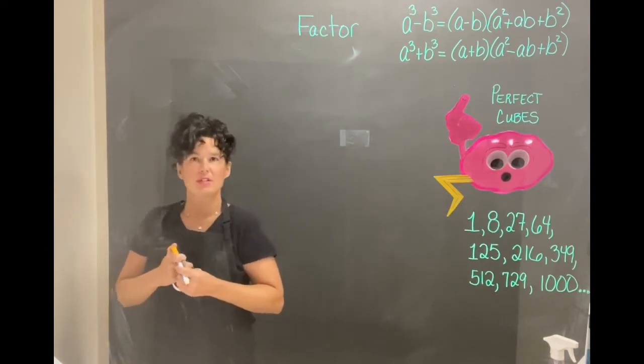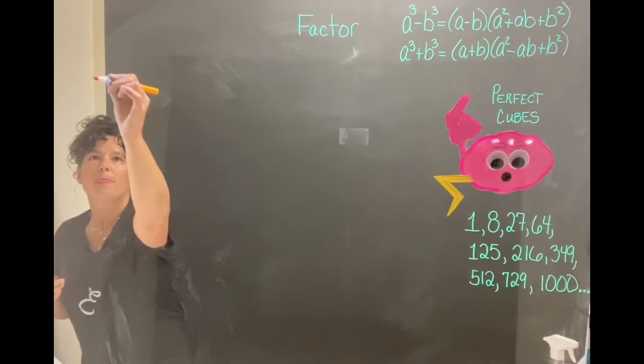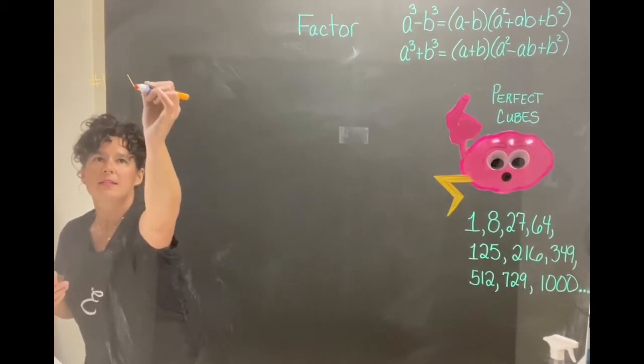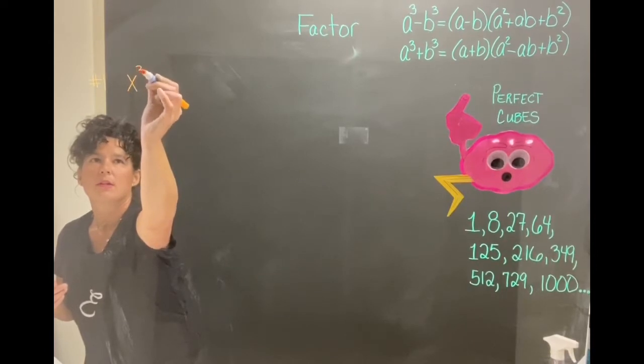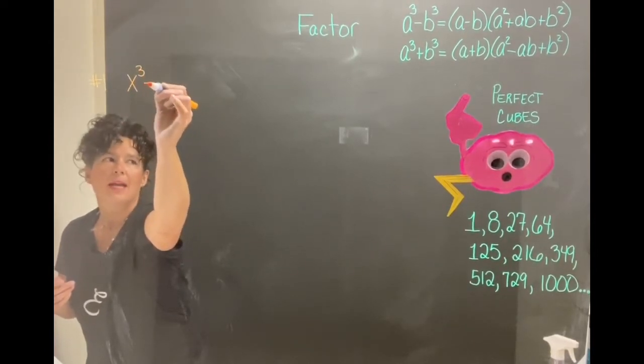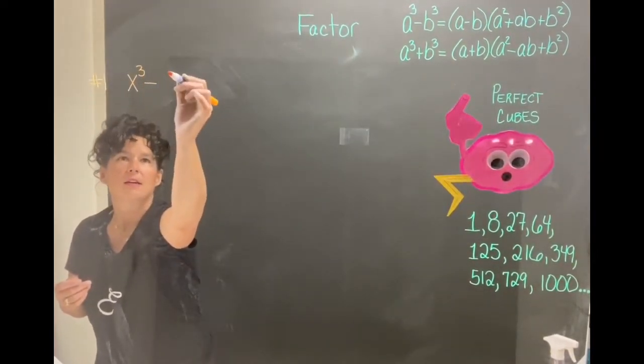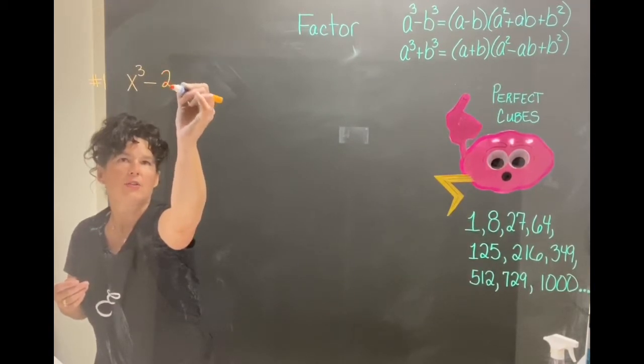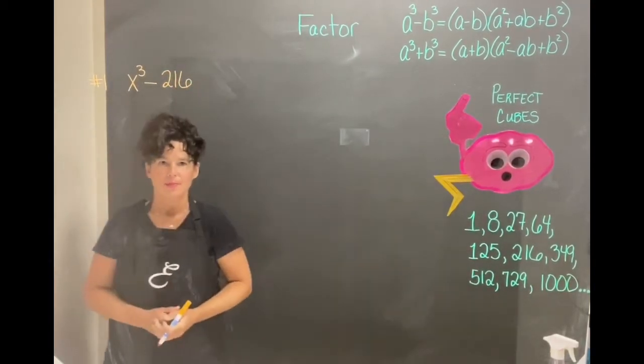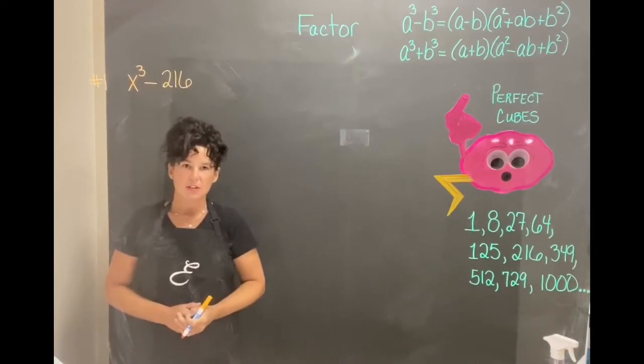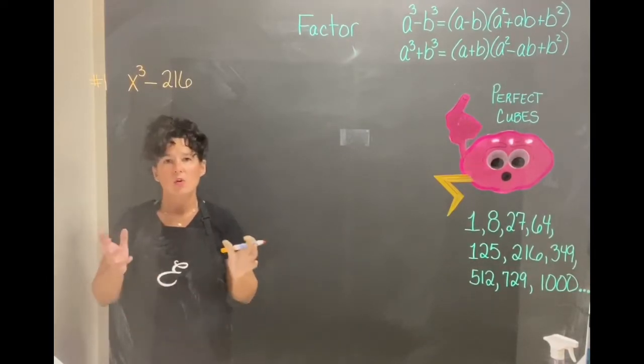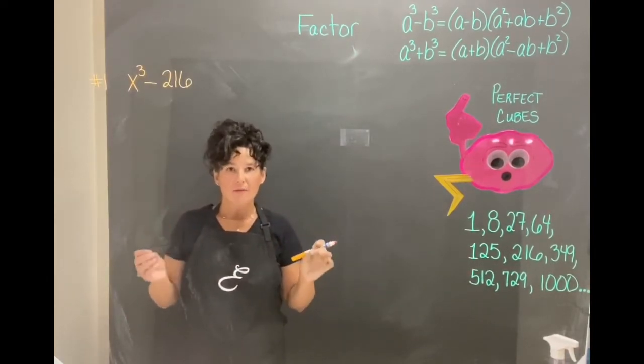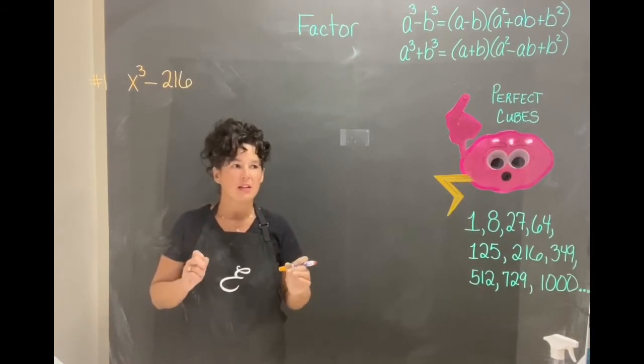Let's start with this first example. How about x cubed minus 216. Just like the perfect squares, we're going to rewrite it so that we emphasize the a and the b in the formula.